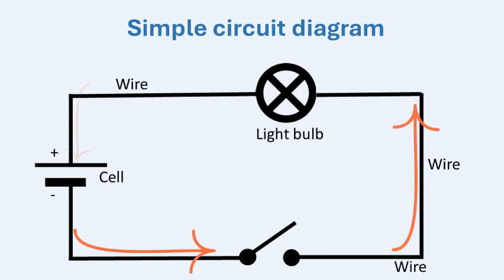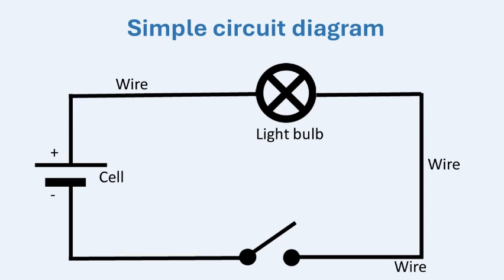Conducting wires are the lines that connect all the parts of the circuit. They act like roads for the electricity to travel on from the cell to the light bulb and back. The switch controls the flow of electricity. When the switch is closed — meaning the lines are connecting — electricity can flow and the light bulb turns on. When the switch is open, or when there are gaps in the lines, electricity stops flowing and the light bulb goes off. By looking at the diagram, you can see how the cell, light bulb, wires, and switch all work together. When the switch is closed, the circuit is complete and electricity flows in a loop, making the light bulb shine.